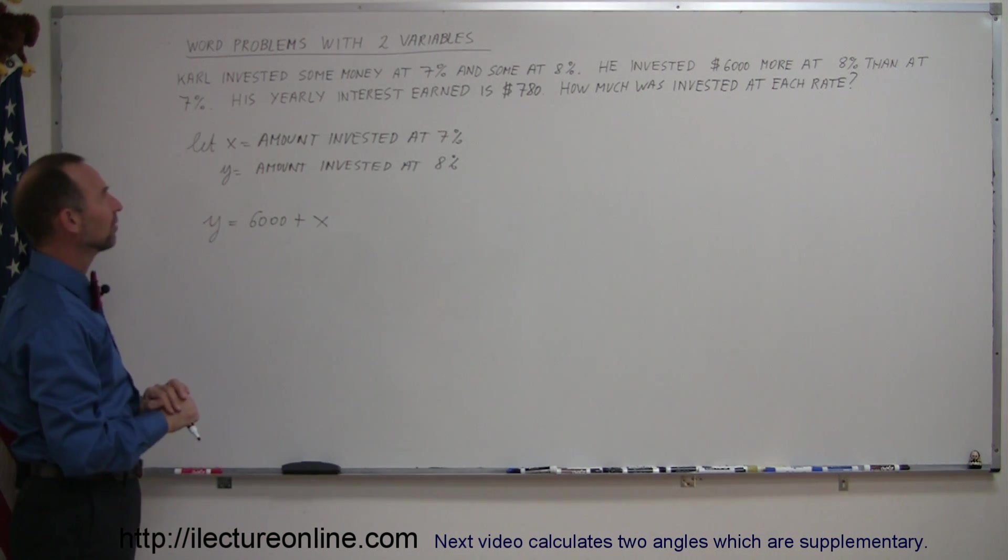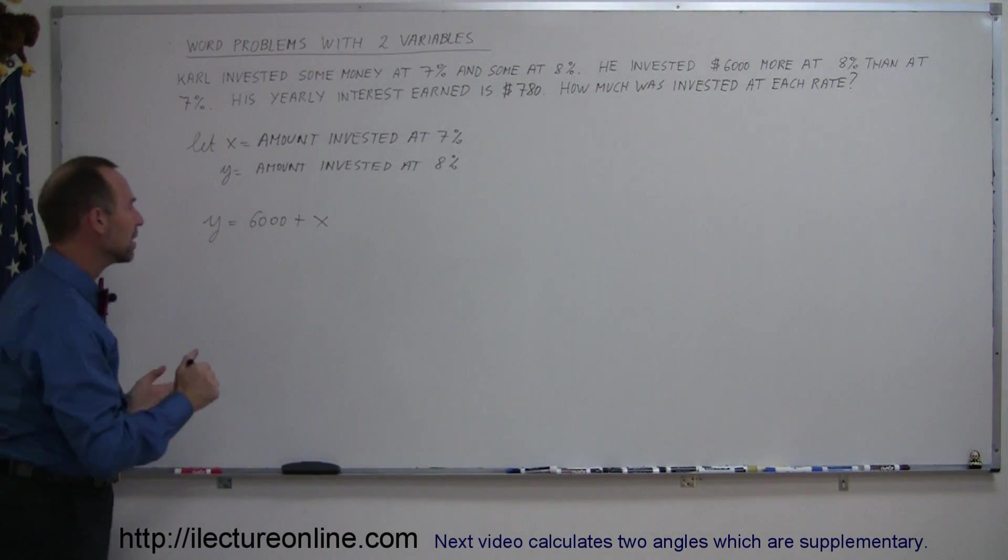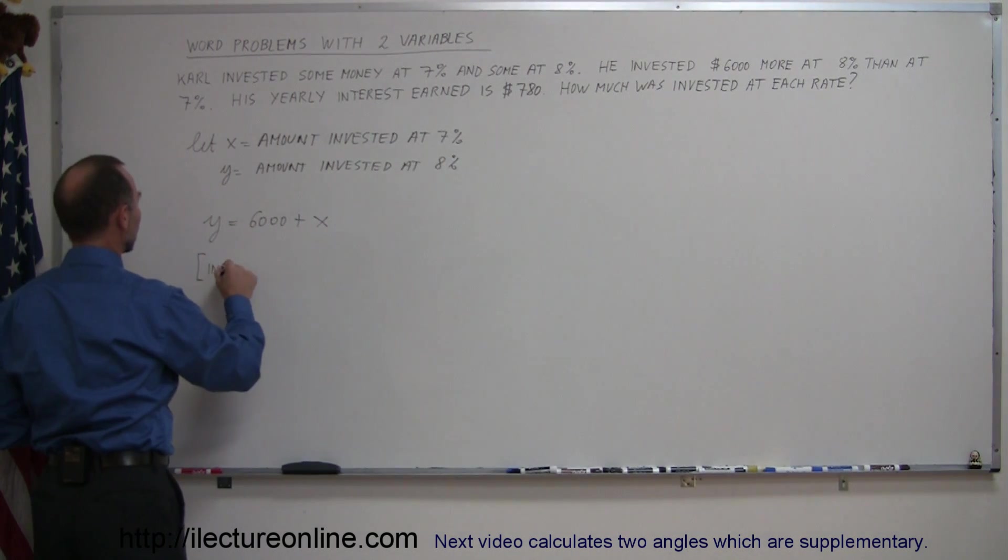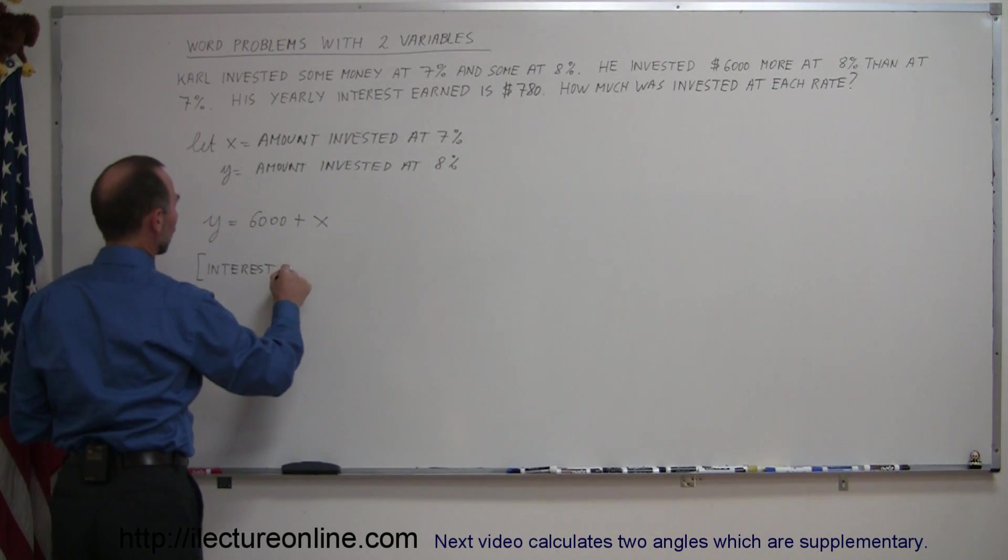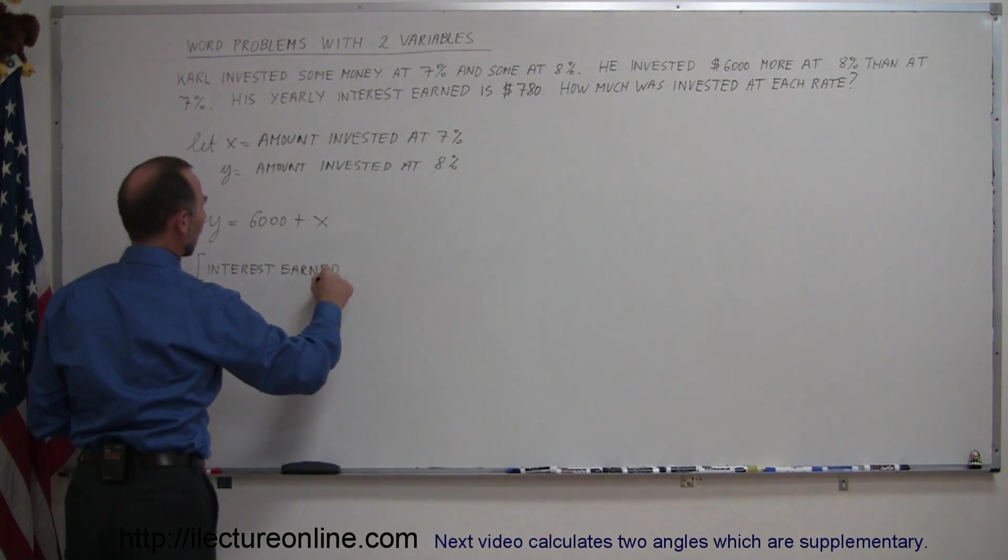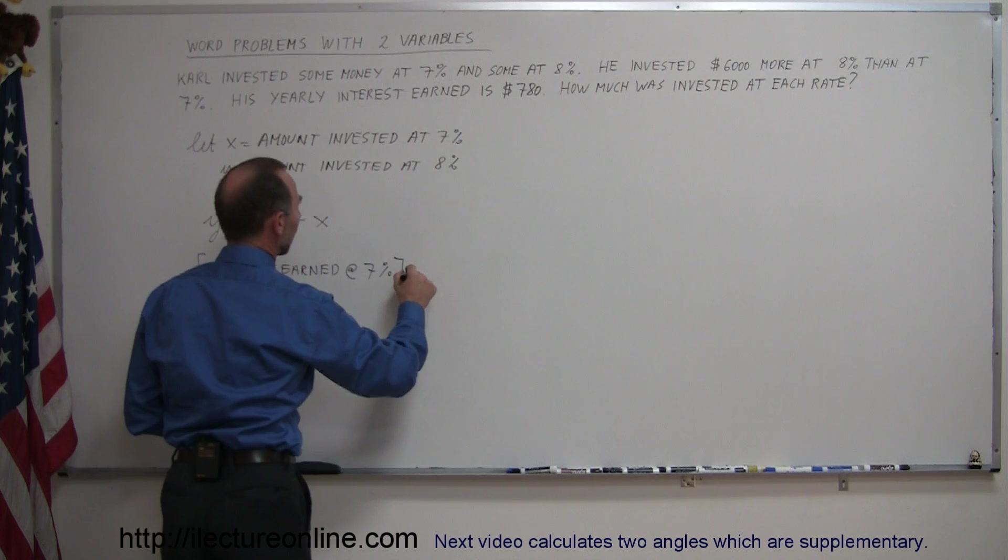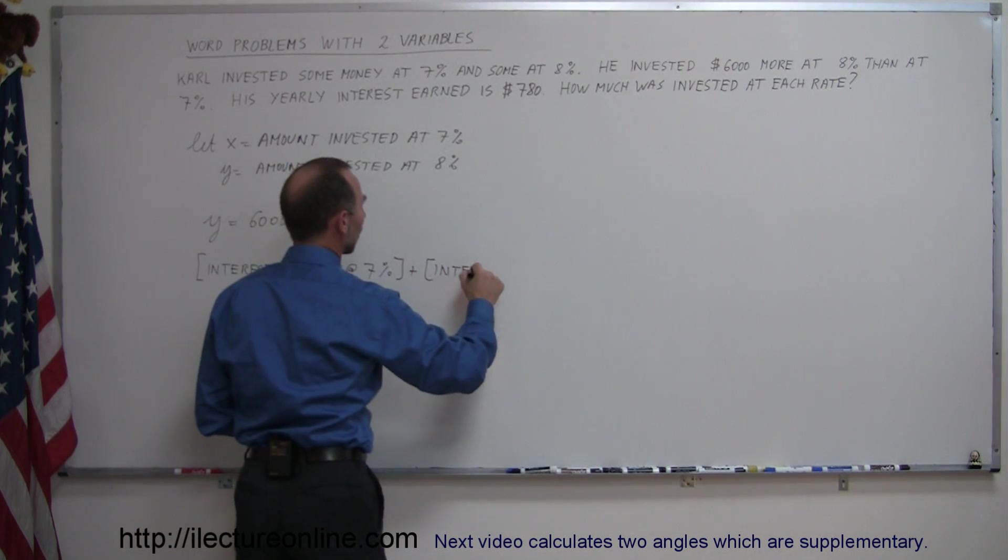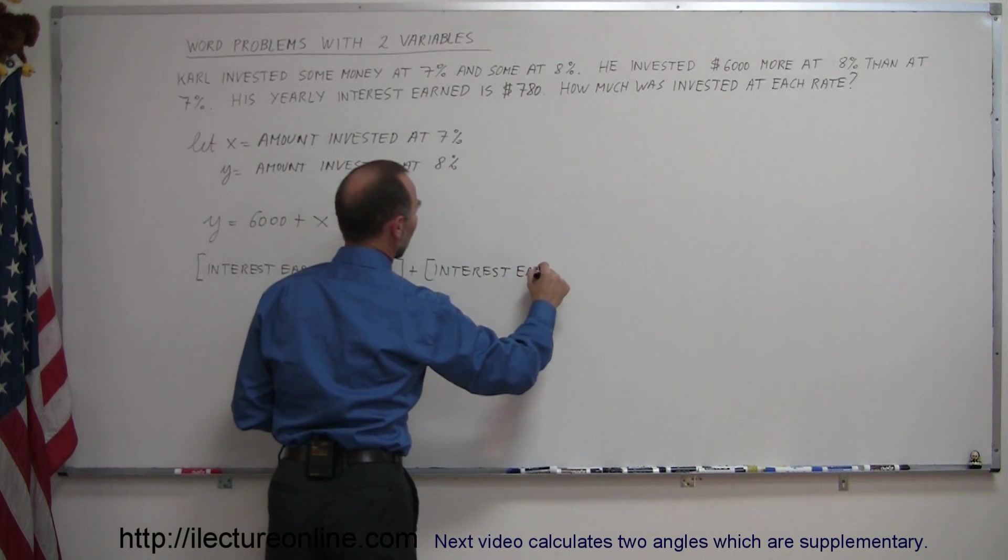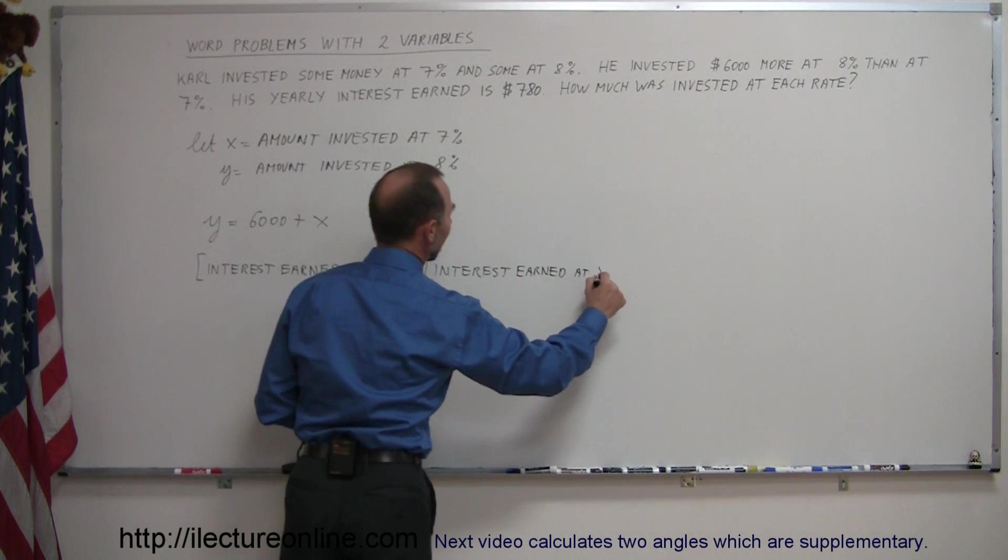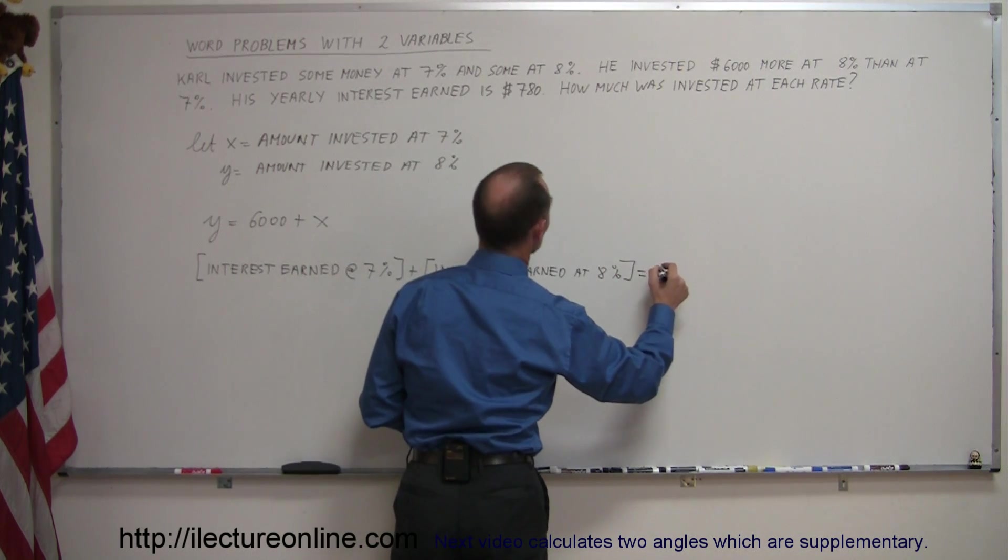In addition to that, it says that the yearly interest earned was $780, which means that the interest earned at 7% plus the interest earned at 8% must add up to $780.